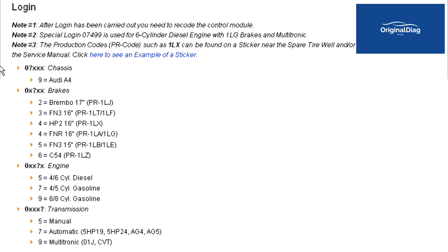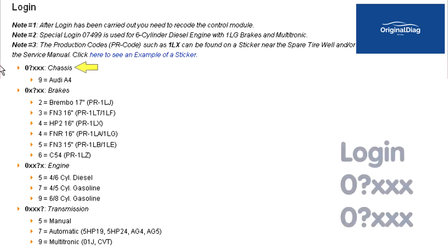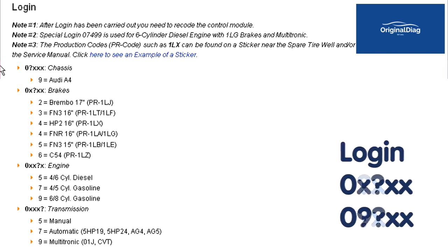Let's start with generating the login, where it says zero question mark xxx chassis. The zero means that that number in that position will always be zero. Question marks and x's are some variable that we must figure out. Question mark is the position we are working on. On the chassis, we only have one option here — 9 equals Audi A4. So the first two digits are 0, 9.